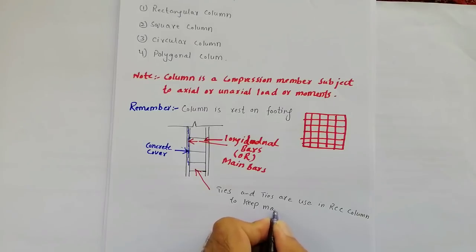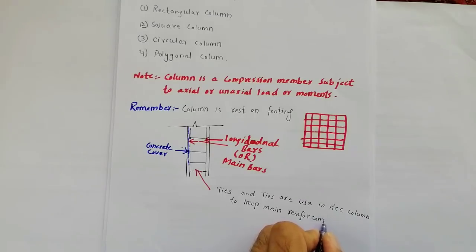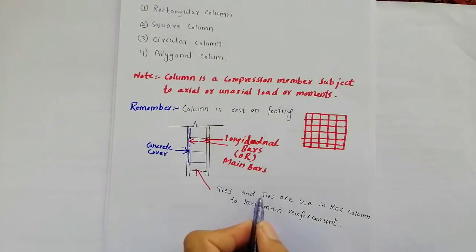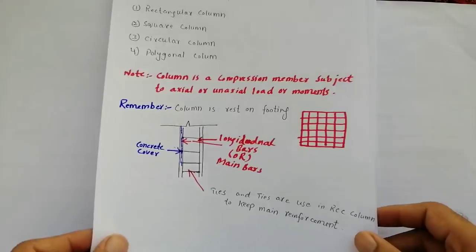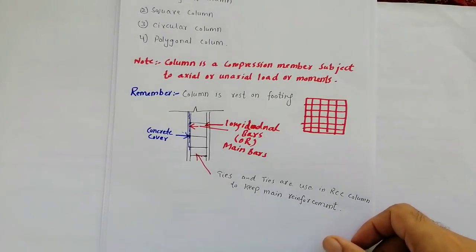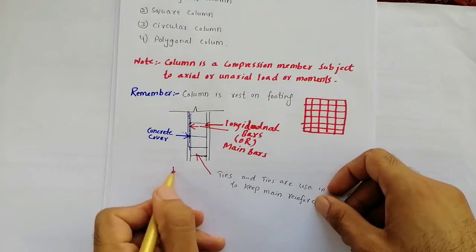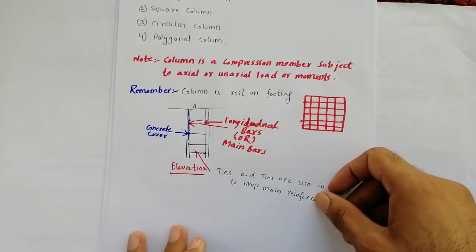Ties keep main reinforcement. So these are main reinforcement. This is elevation. Now I will show it here in plan.